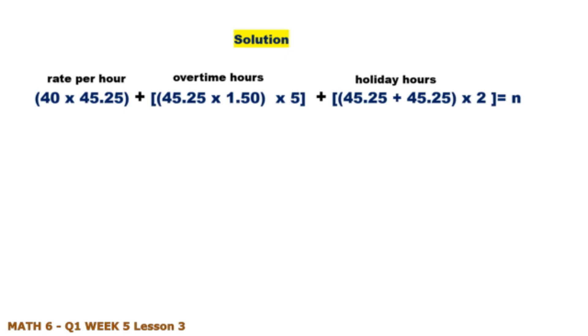Let's multiply 40 times 45.25. For overtime hours, 339.375. And for holiday, 181. Then let's add 2,330.375 in pesos. That is 2,330 pesos and 38 centavos.